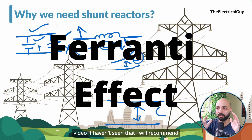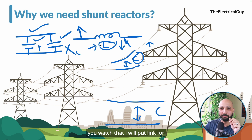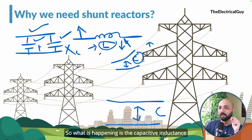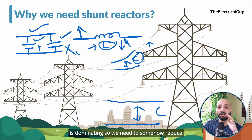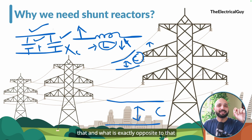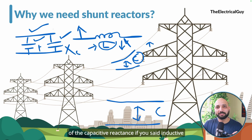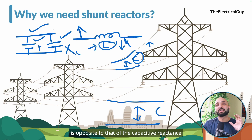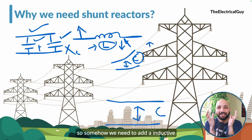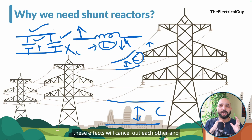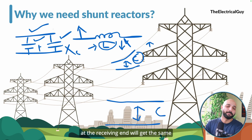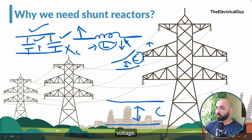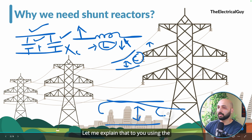We discussed this in the previous video — if you haven't seen it, I'll put a link in the description. So what is happening is the capacitive reactance is dominating, and we need to somehow reduce that. What is exactly opposite to capacitive reactance? If you said inductive reactance, you are 100% right. Inductive reactance is opposite to capacitive reactance, so we need to add inductive reactance into the system. Once you do that, these effects will cancel out each other and at the receiving end we'll get the same voltage. Let me explain that using a mathematical example.